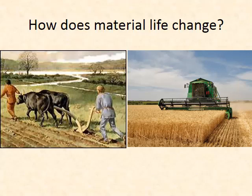A large part of the study of economics is looking at how material life changes over time. As you can see from these pictures, they're both completing the same task — planting and harvesting crops, agriculture. On the left, you see two guys with a wooden plow carried by two oxen, tools that were very advanced for their time. But now these tasks are carried out by large machines that are highly efficient and only need one person to operate. Material life — the way we do things — changes significantly over time.